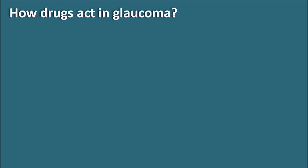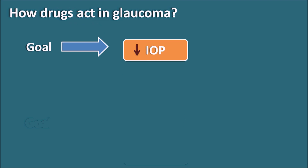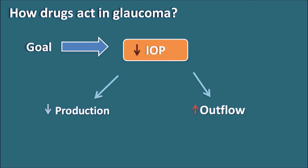How do drugs act in Glaucoma? One of the goals in the treatment of Glaucoma is to decrease the intraocular pressure. This can be achieved by decreasing the production of aqueous humor or by increasing the outflow of aqueous humor. Some drugs can decrease both production and increase the outflow, and in this video we will see the different types of drugs used in the treatment of Glaucoma and how they affect intraocular pressure.